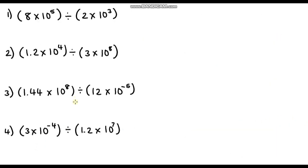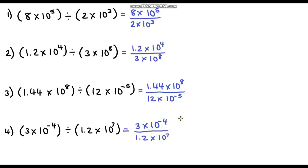Pause the video and see if you can answer these four questions. Let's go through question one together. We've got 8 divided by 2, which is 4. Then for the powers of 10, we subtract the indices to get 10 to the power of 2. So the final answer is 4 times 10 to the power 2.